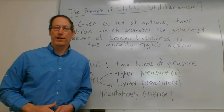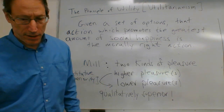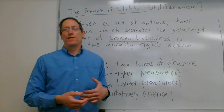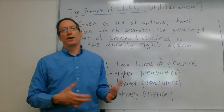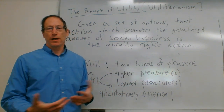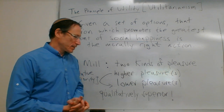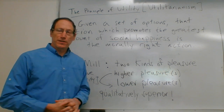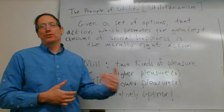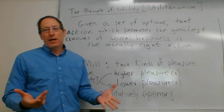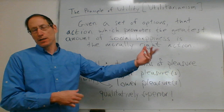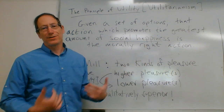Quantitative superiority is straightforward: if I have five dollars compared to a hundred dollars, the hundred is quantitatively more. If something is quantitatively superior, it is the same kind of thing — just more of it. Five dollars, a hundred dollars, a thousand dollars — it's still money, just more of the same.